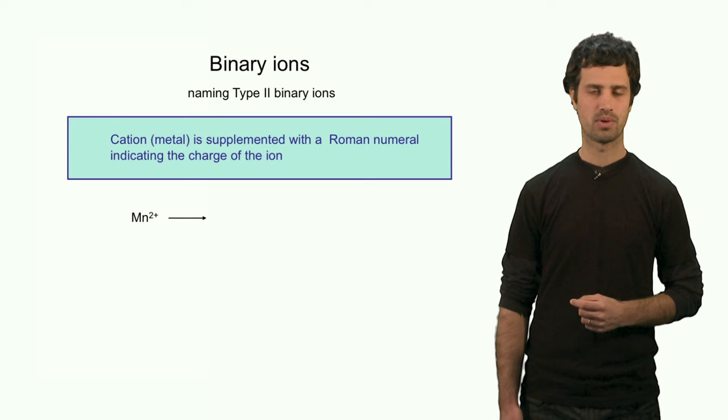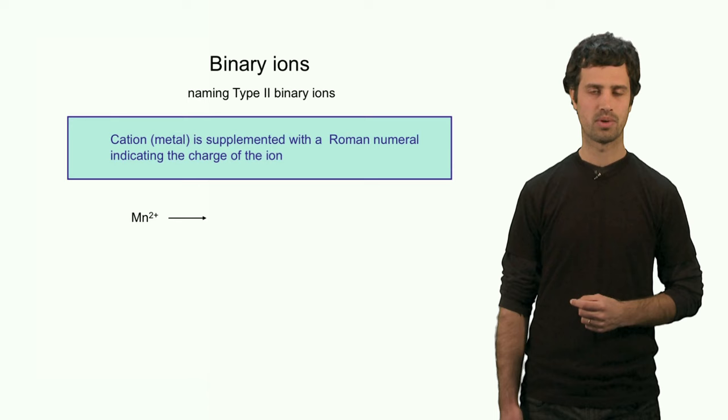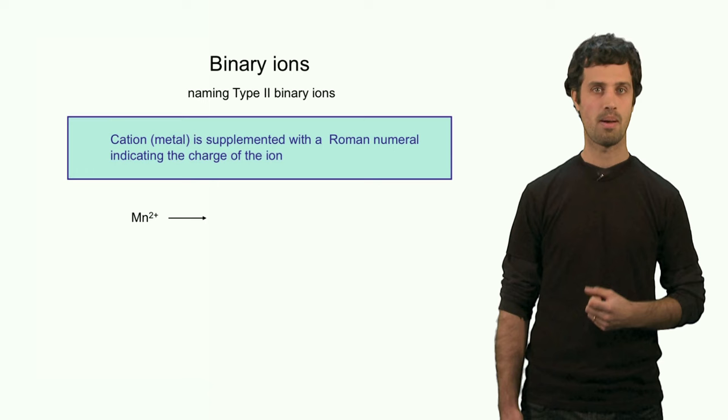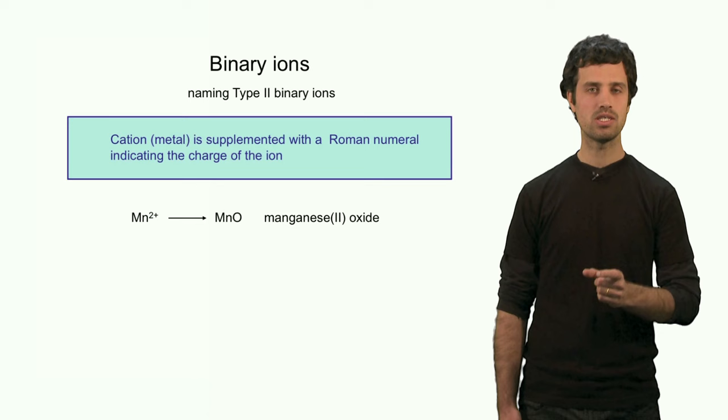Here is an example. Manganese 2 plus ions. Let's say I make an oxide, a manganese oxide. In this case, the manganese oxide would be manganese(II) oxide because we have to specify with a Roman numeral the charge of the cation.